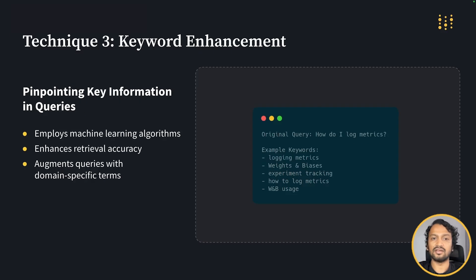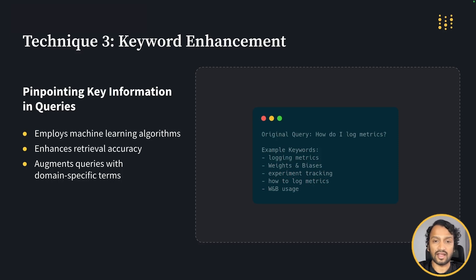Let's move on to our third technique: keyword enhancement. Keyword extraction and expansion is a tried and tested method in information retrieval for decades, and it's part of many search engines and recommendation systems we use daily. In the context of RAG systems, keyword extraction and expansion employs machine learning algorithms to identify, extract, and enhance the most important words and phrases from user queries. In OneBot, we adopted keyword and key phrase enhancements to improve domain specificity. For example, our system extracts and injects key terms such as 'logging metrics,' 'experiment tracking,' and 'OneDB usage' into the query 'how do I log metrics?' These enhanced keywords act as lexical anchors, guiding our system to the most relevant information in our knowledge base, ensuring more relevant and accurate information retrieval — especially when dealing with domain-specific knowledge.